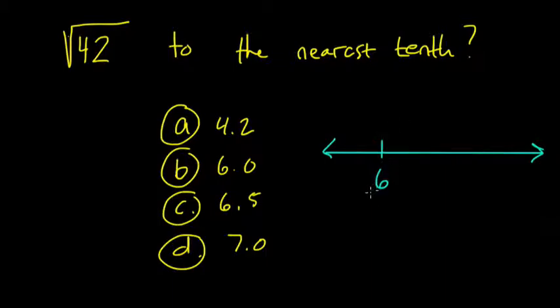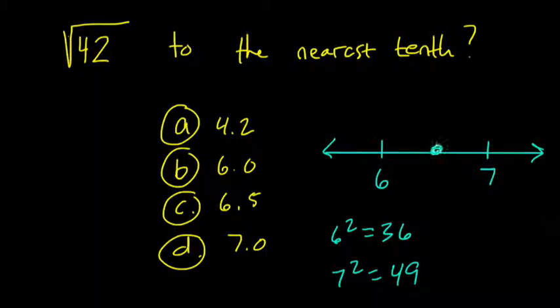I have 6 squared, which is 36. So the square root of 42 is above 6, and 7 squared is 49. 42 is below 49, so the square root of 42 is below 7. So it's somewhere between 6 and 7.